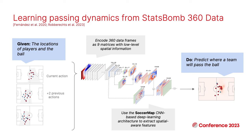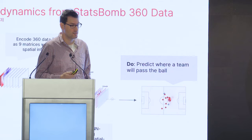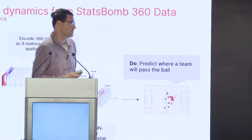We're going to build something based on Javier Fernandez and Luke Bourne's well-known soccer map model, which Peter adapted last year to work with 360 data. It takes the current action as well as information for the previous two actions and builds several features — such as the location of the ball, the distance from the ball to the goal. We encode all this information in nine matrices and run it through a convolutional neural network to predict the probability that the ball is passed to each location on the pitch.